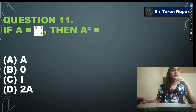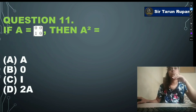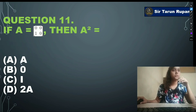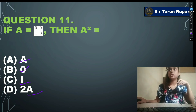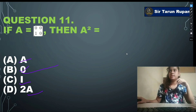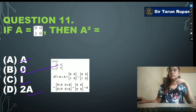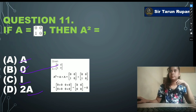Question 11: if A = [0,0;1,0], then A² equals — option A: A, option B: 0, option C: I, option D: 2A. Our correct answer is option B: 0. You can see the solution.